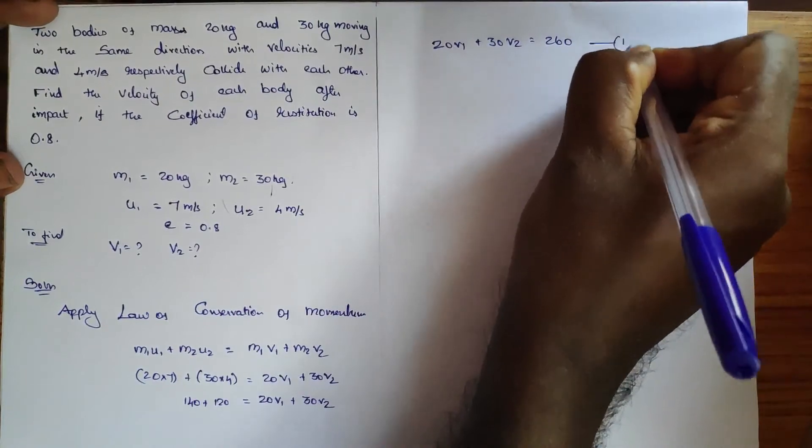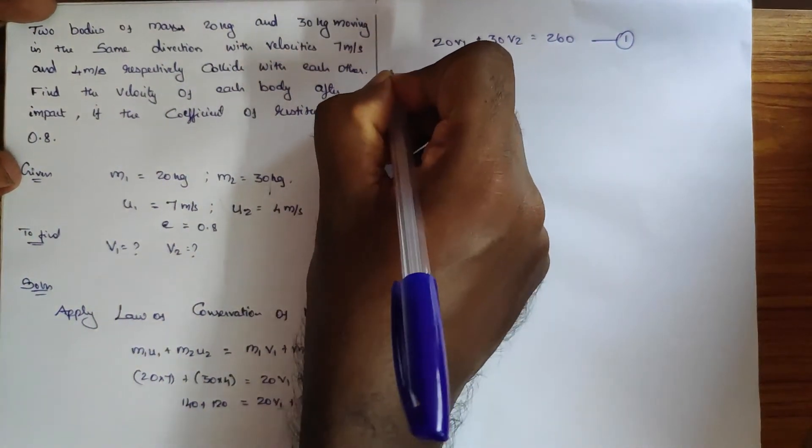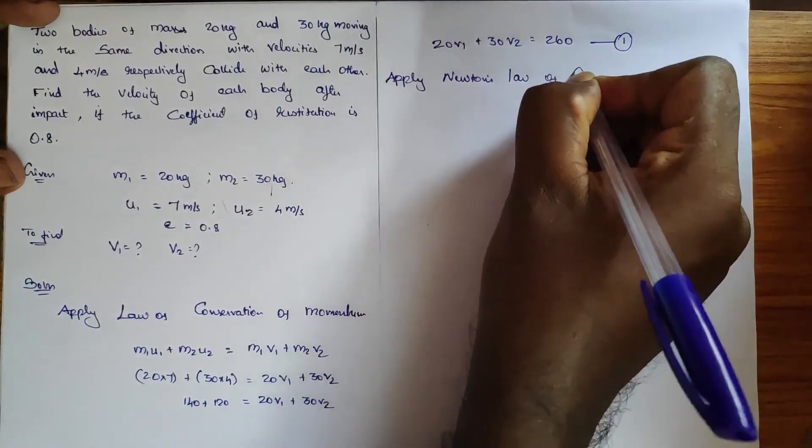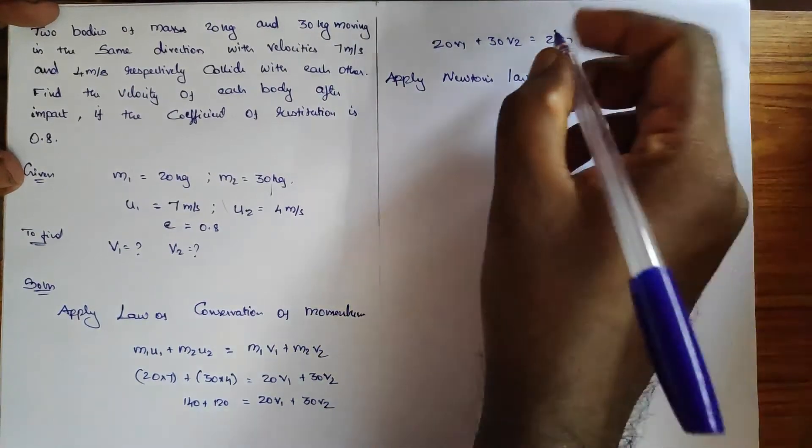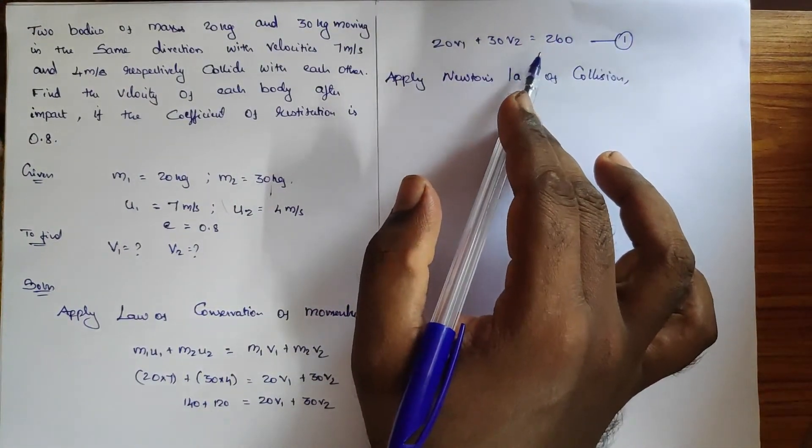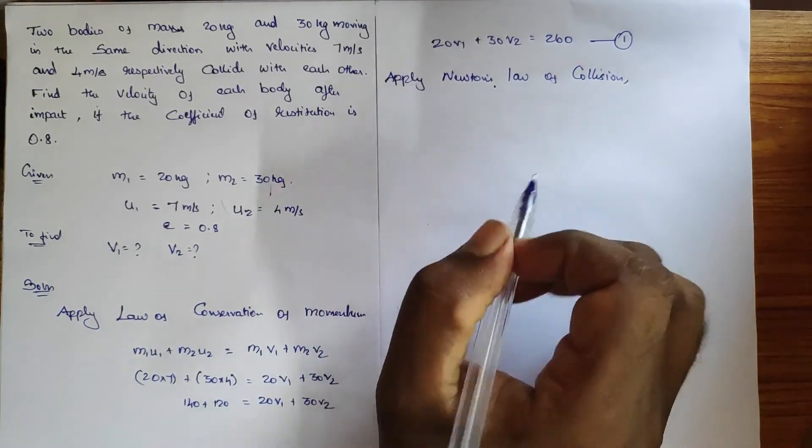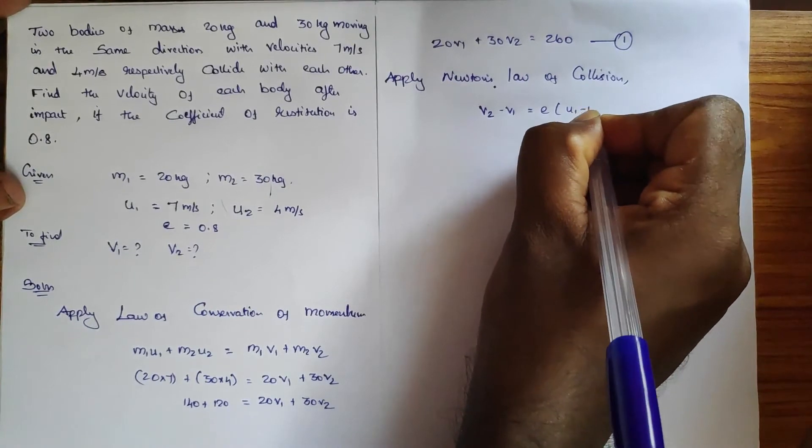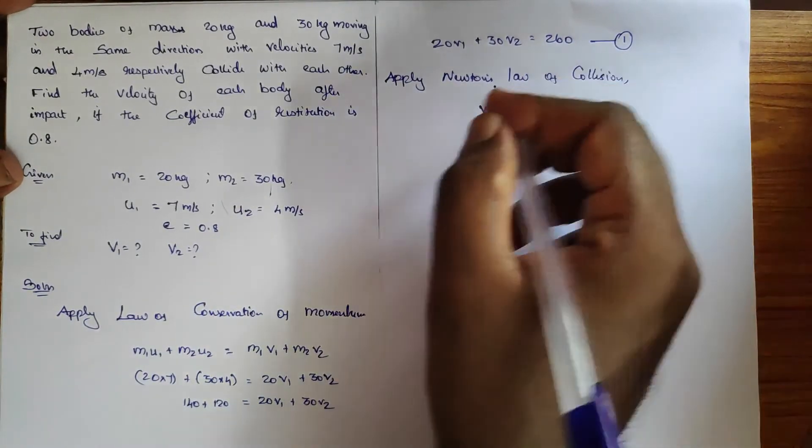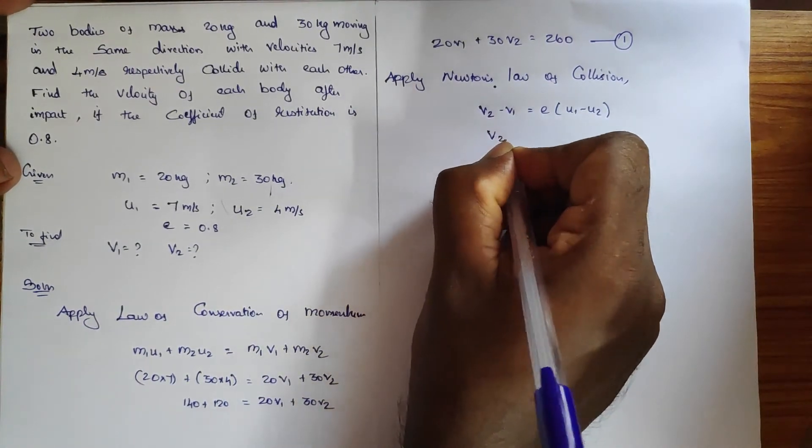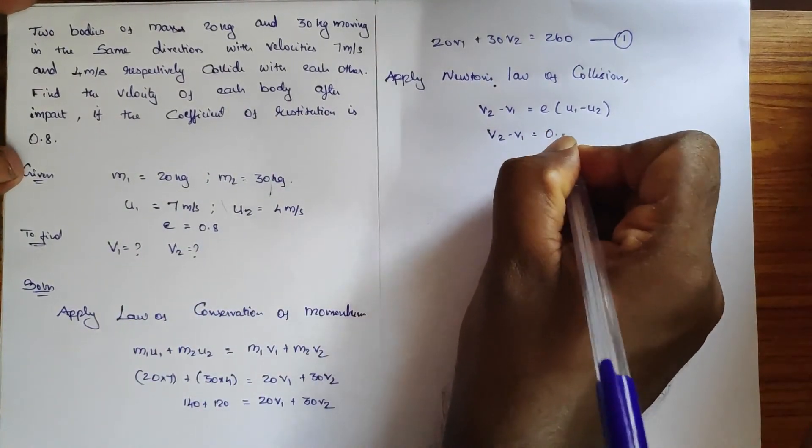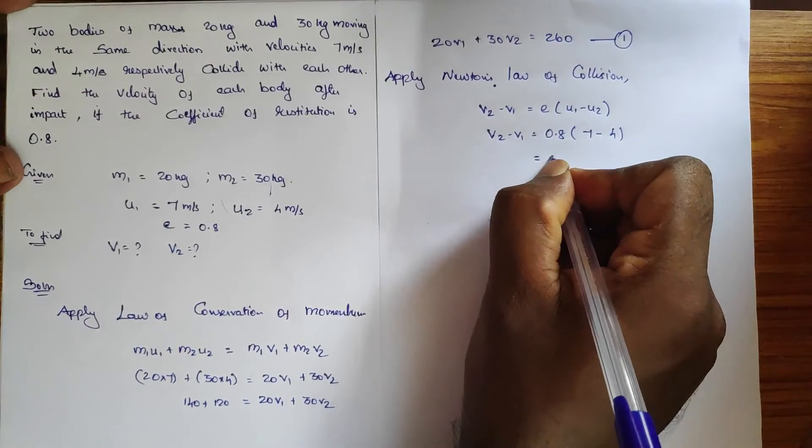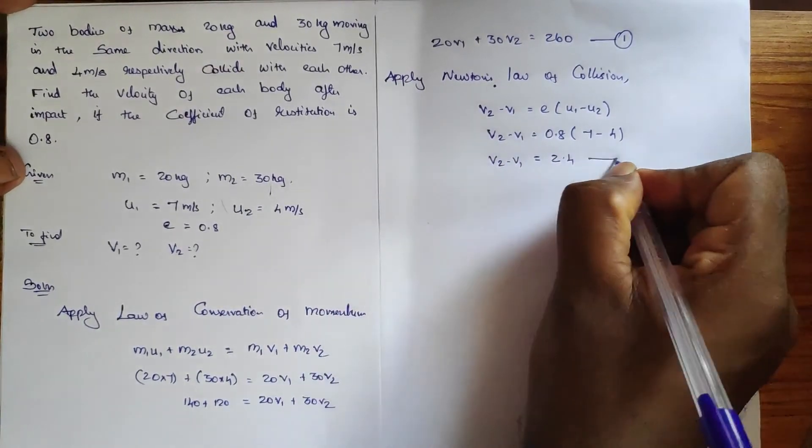So 20 v1 plus 30 v2 equals 260, which is equation number one. When I apply Newton's law of collision, the formula is v2 minus v1 equals e into u1 minus u2. So v2 minus v1 equals e, the restitution coefficient 0.8, times u1 which is 7 minus 4.